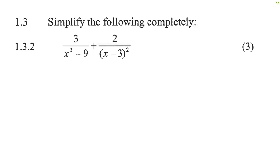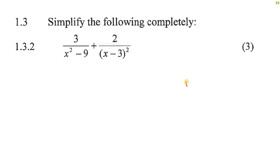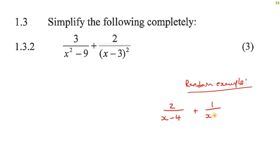Simplify the following. What we'll do here is make sure that these parts are factorized — that's very important. Here's a random little example: 2 over (x minus 4) plus 1 over (x plus 3) plus 3 over (x squared minus 3x minus 4).